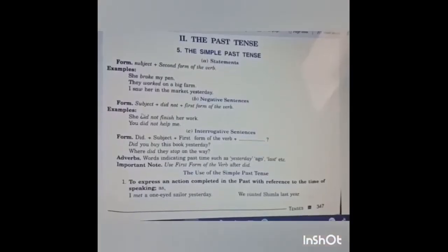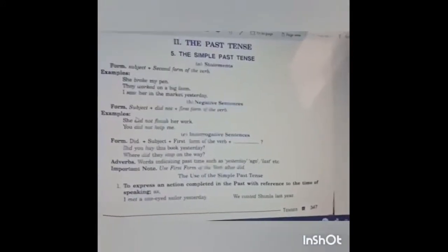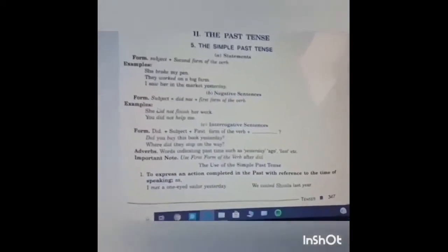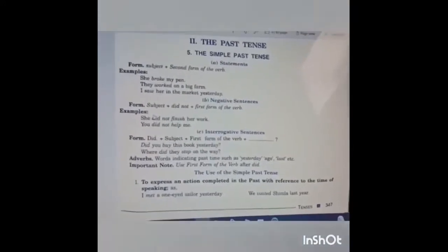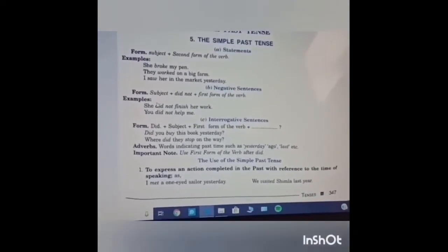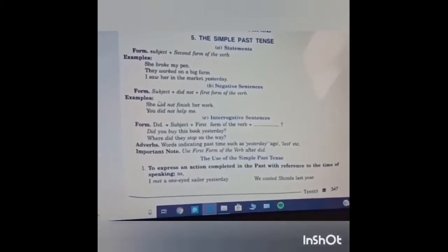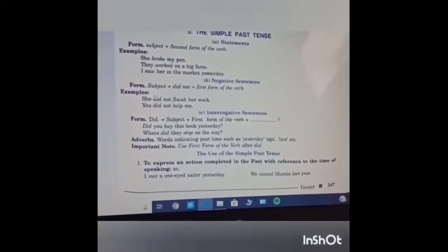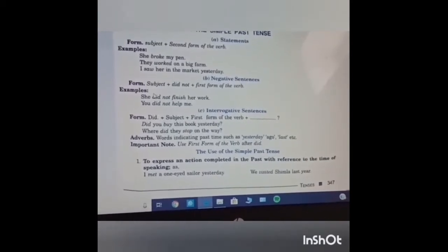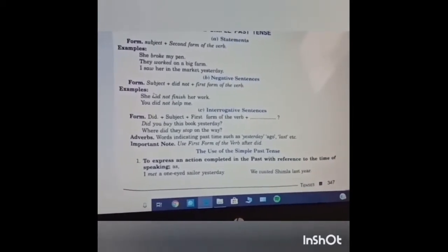Past tense. First is the simple past tense. Form: subject plus second form of verb. Example: she broke my pen, they worked on a big farm. Now comes the negative sentence. The above was for affirmative sentences. For negative sentences, the form is subject plus did not plus first form of verb. Example: she did not finish her work.